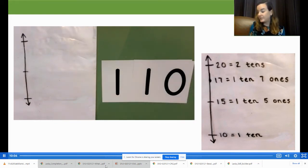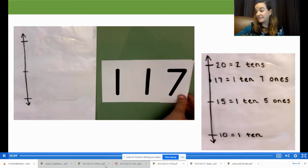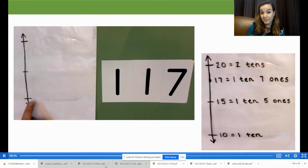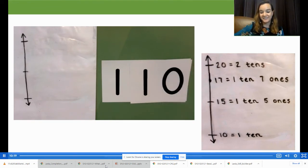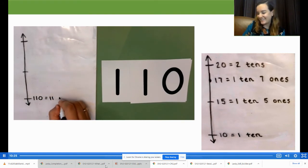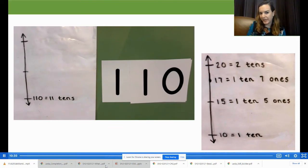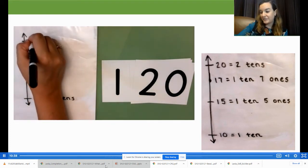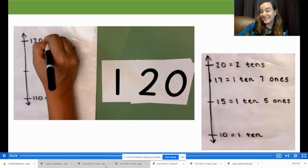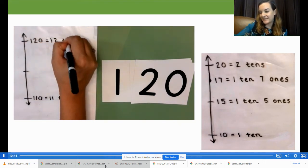So when we round 117 to the nearest 10, what will our bottom end point be? 110, which is the same as 11 tens. What about the top end point? 120, which is the same as 12 tens.